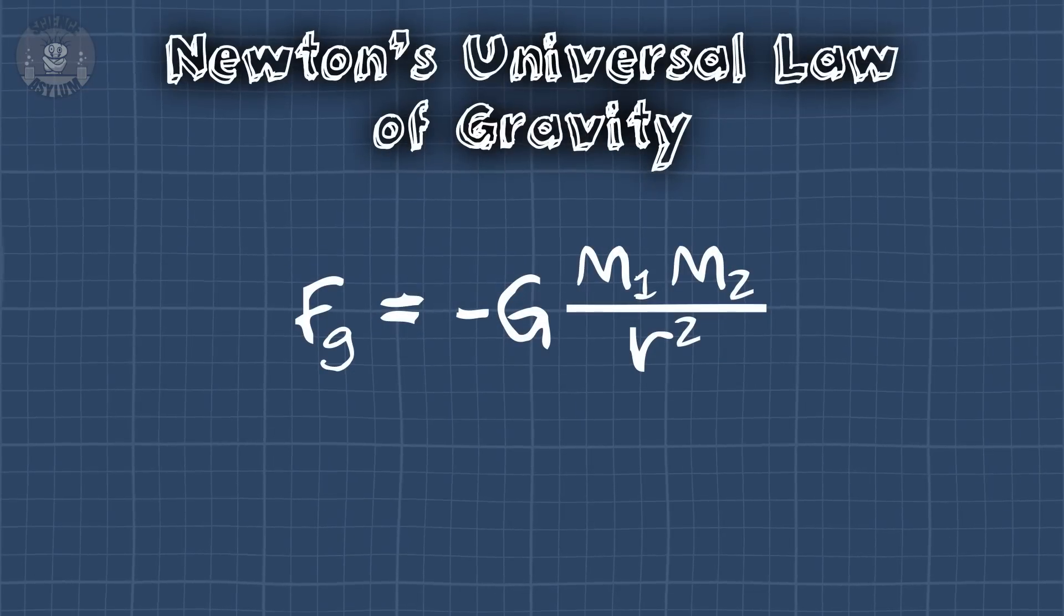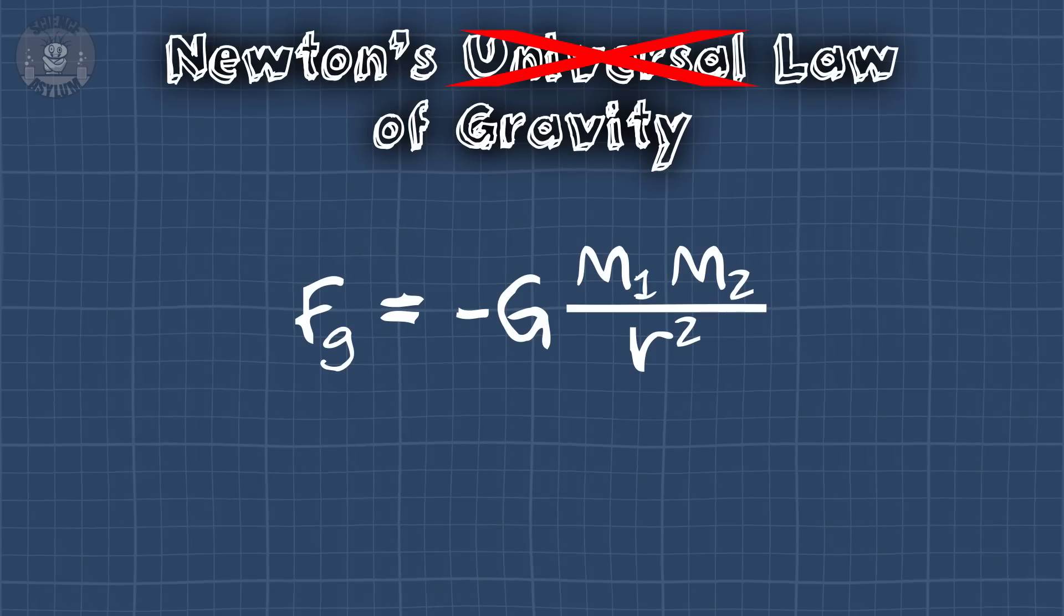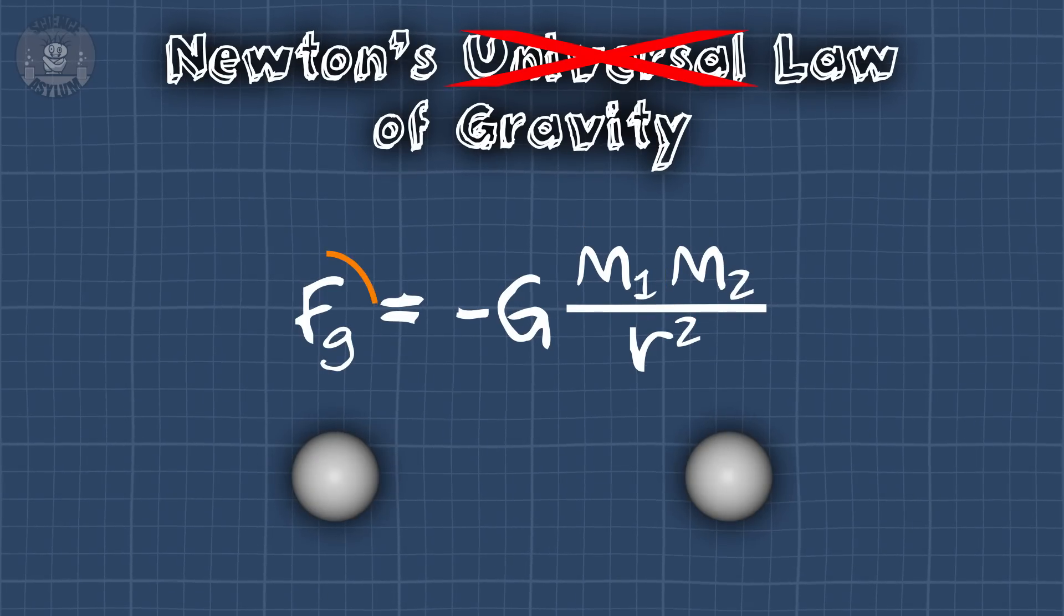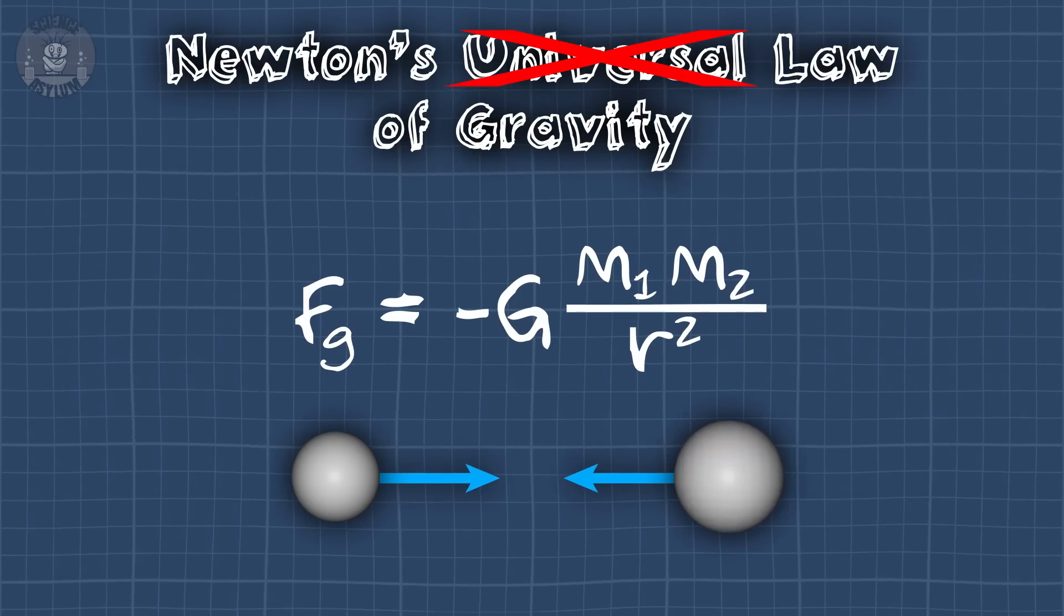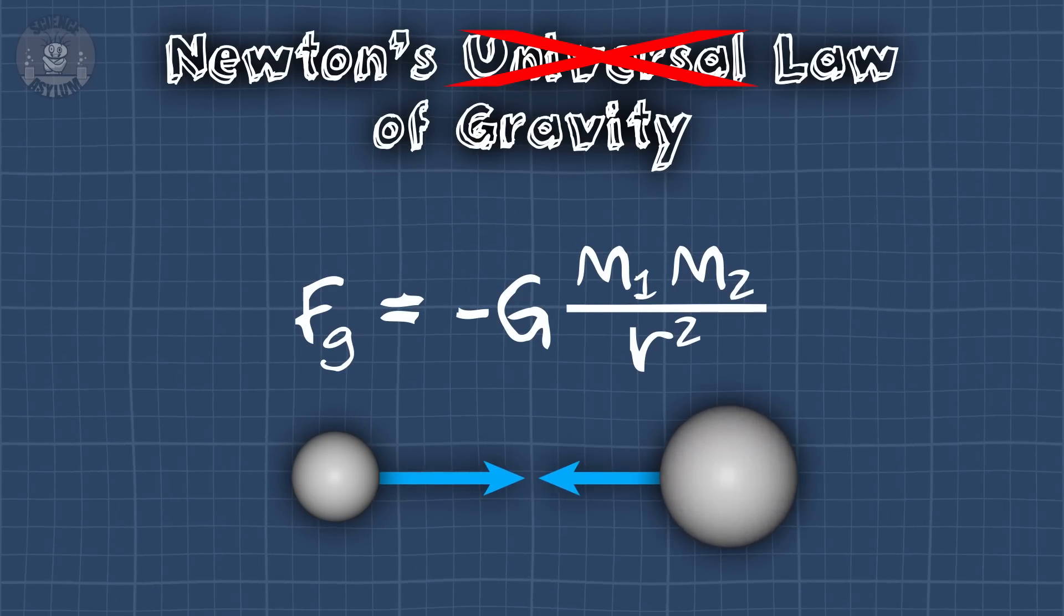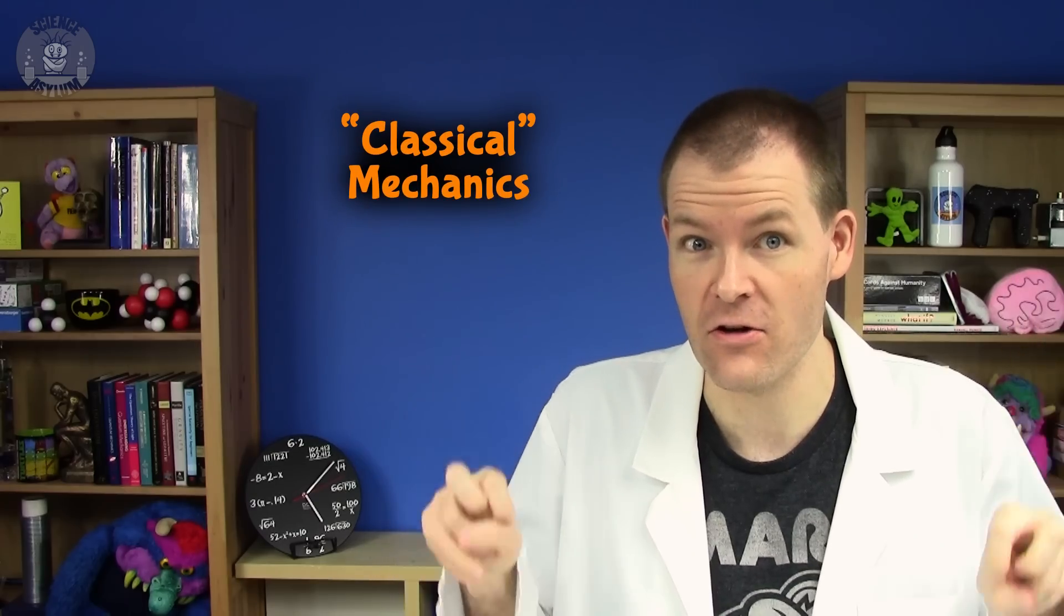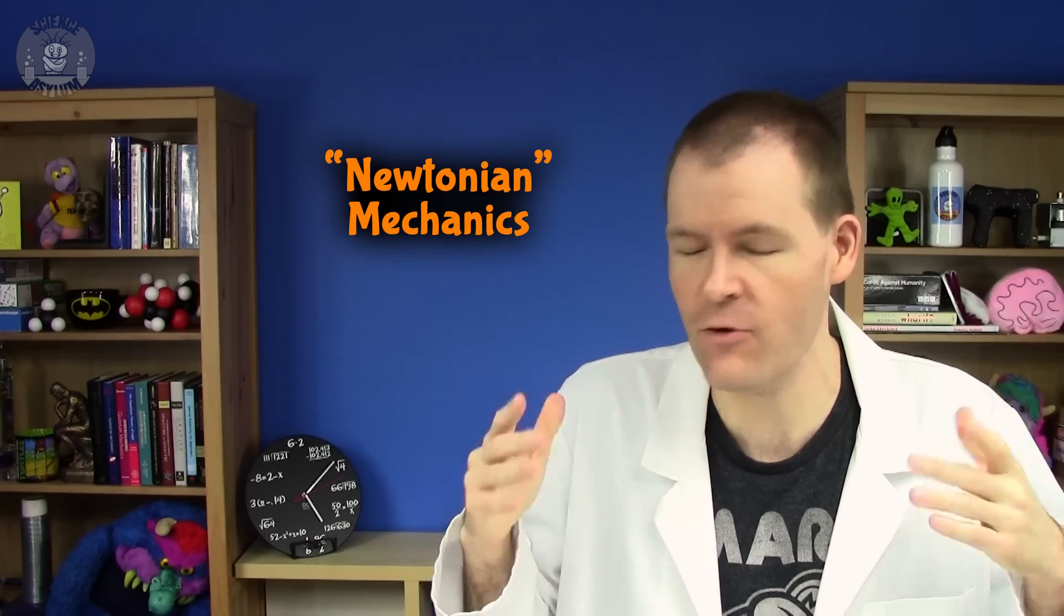The second place mass appears is in gravity. Newton's universal law of gravity, which is in no way universal, says two masses exert gravity on each other over some distance. More mass in either object means more gravity between them both. Both laws are aspects of something we call classical or Newtonian mechanics for obvious reasons, and it works really well most of the time.